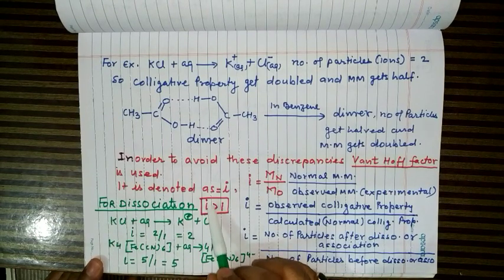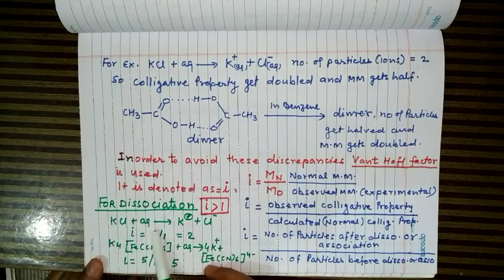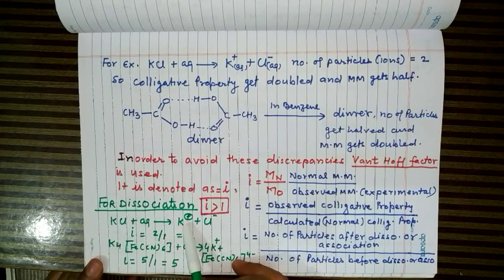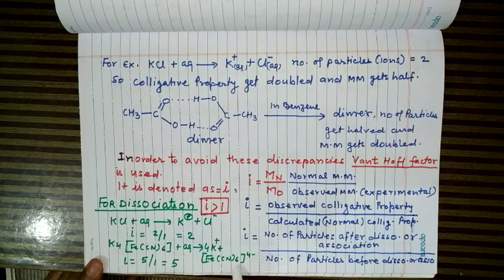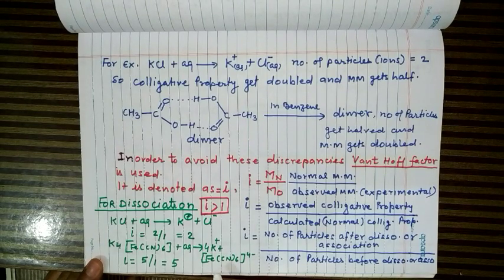In the case of dissociation, the value of i is greater than one. For example, KCl in water dissociates to K⁺ and Cl⁻ — two particles from one, so i = 2. Similarly, K₄[Fe(CN)₆] in aqueous solution gives four K⁺ ions and one [Fe(CN)₆]⁴⁻ ion, so the number of particles becomes five and i = 5.